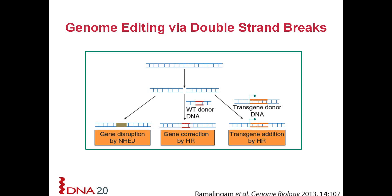This results in a frameshift mutation which is convenient for knocking out genes. Another way to repair a double-stranded break is to supply a cassette, whether it's a short cassette with oligonucleotides or a larger cassette containing a different gene or region of a gene, which helps with creating gene replacements or also creating precise point mutations.